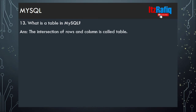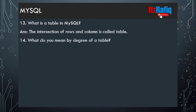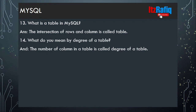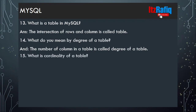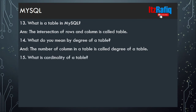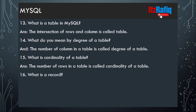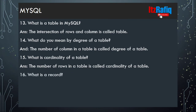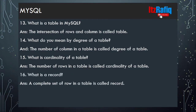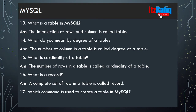What is a table in MySQL? It is the intersection of rows and columns. What do you mean by degree of a table? It is the number of columns in a table. What is cardinality of a table? It is the number of rows in a table. What is a record? A complete set of rows is called a record.